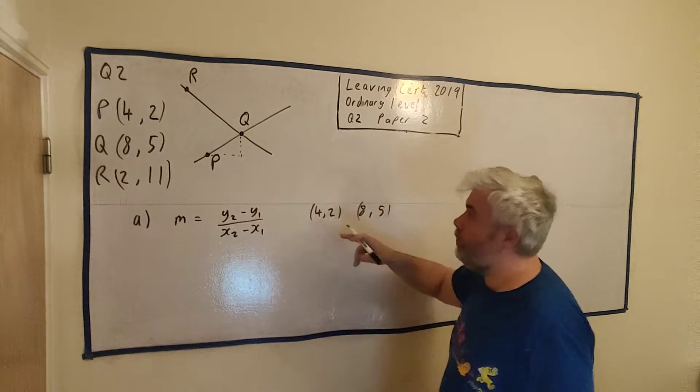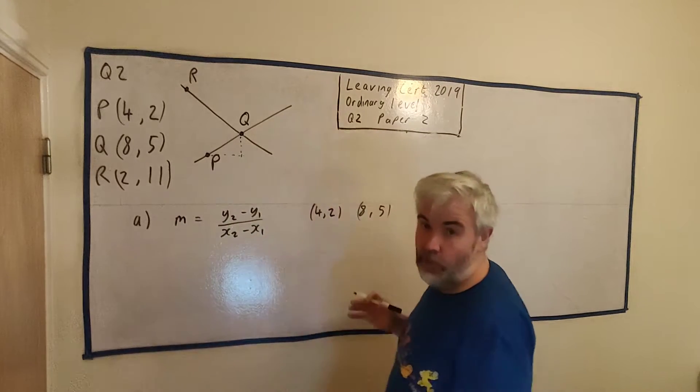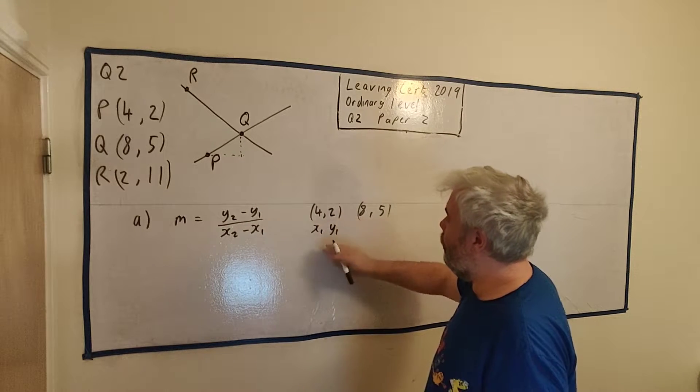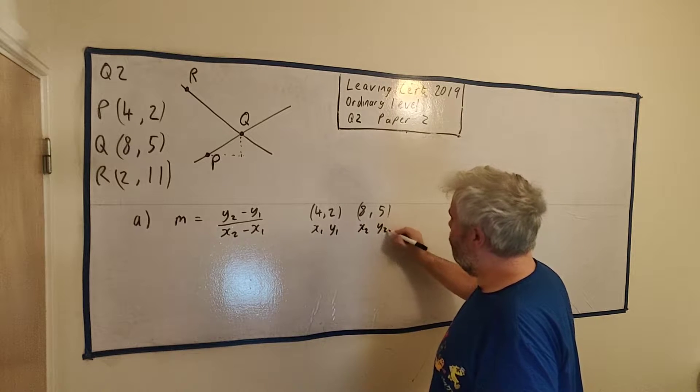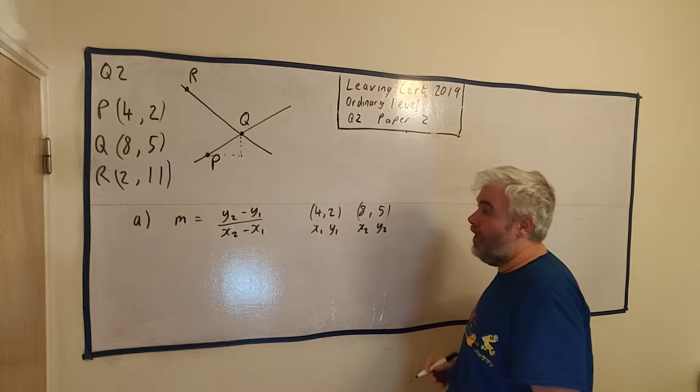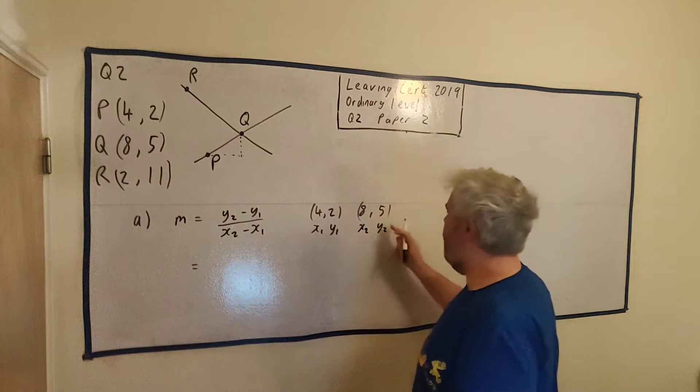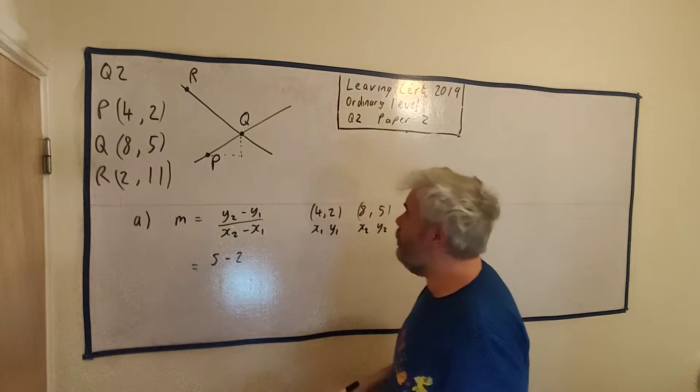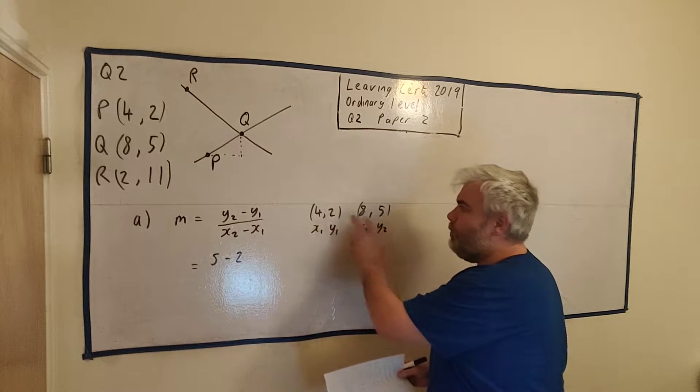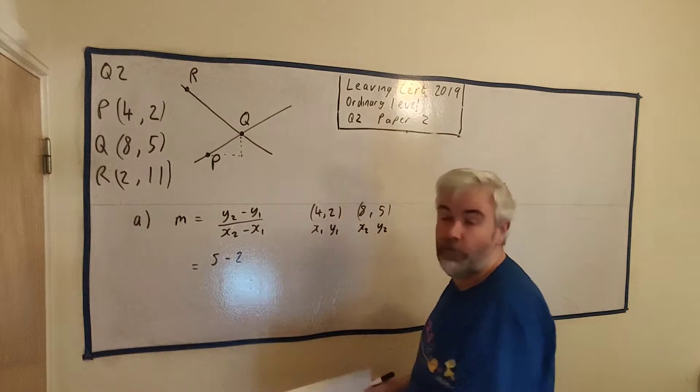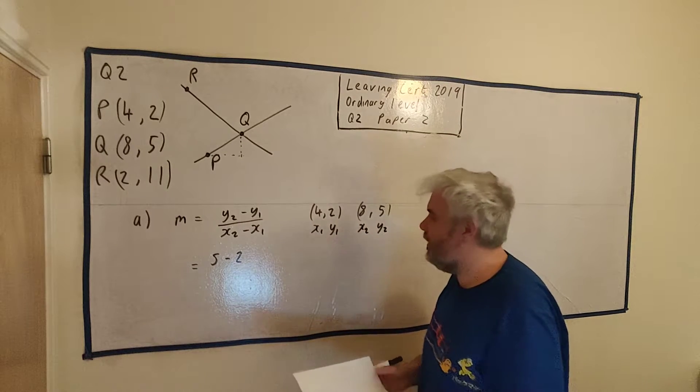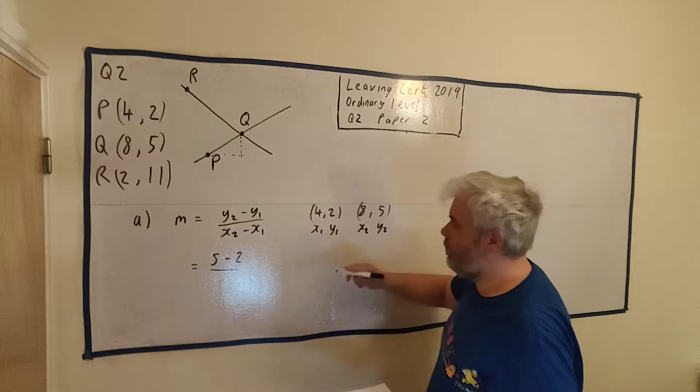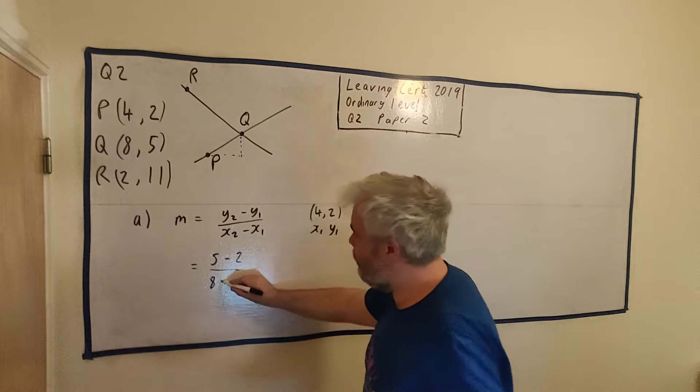So where X and Y are two points. What two points do we have? We have P at (4, 2) and Q at (8, 5). It doesn't matter which way we do it. The slope of this is the same as the slope of that. This formula will make sure to get the right sign for us.